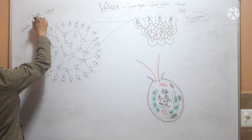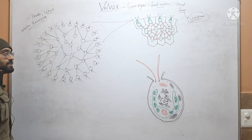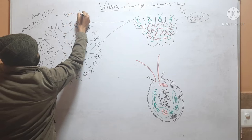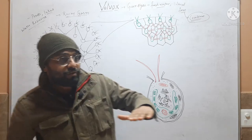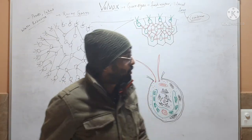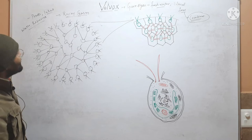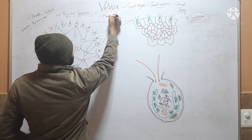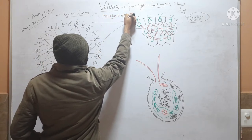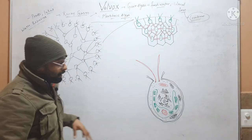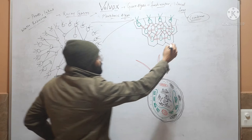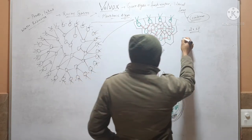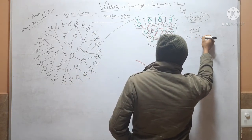Volvox is found in other water reservoirs and is predominantly found in the rainy season. In the rainy season you will find a greenish mat on the surface of the water — that greenish mat is mainly composed of Volvox. Volvox is a planktonic algae. There are worldwide 20 species of Volvox, but in India only six species are found.